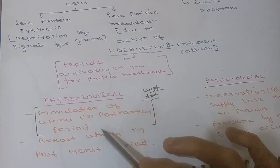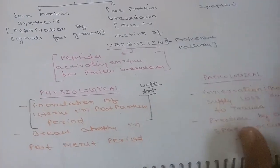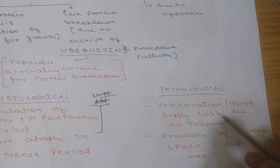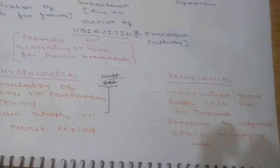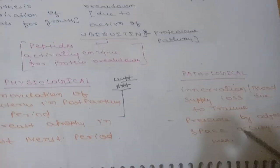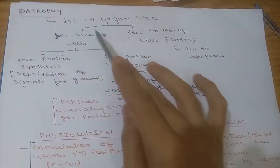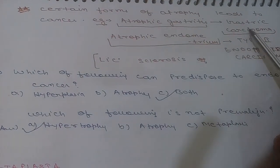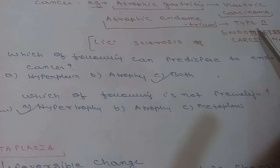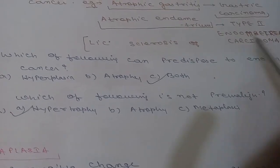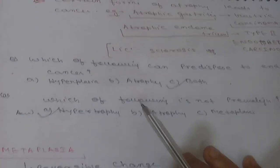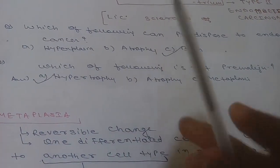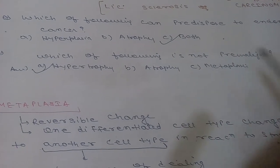Decrease in number of cells is due to apoptosis. Physiological atrophy is seen in involution of the uterus in the postpartum period or breast atrophy in the postmenopausal period. Pathological atrophy occurs with loss of innervation or blood supply due to trauma, or pressure by an adjacent space-occupying mass. Atrophy can also lead to cancer — atrophic gastritis leads to gastric carcinoma, and atrophic endometrium is responsible for type 2 endometrial carcinoma.